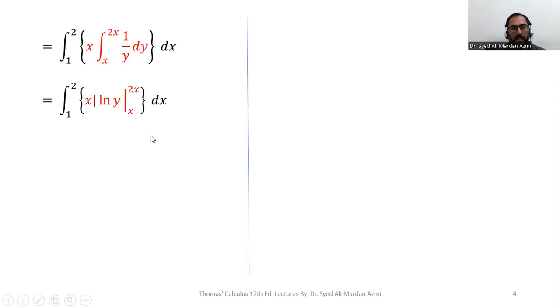In the next step, we will apply fundamental theorem of calculus for the limits, upper limit minus lower limit. So for this, we have replaced y with 2x and minus y with x. We have natural log of 2x minus natural log of x. For this, I have applied the property of natural log. Natural log of a minus natural log of b is equal to natural log of a over b. So from this property, I get natural log of 2x over x. x and x will cancel out. So we have natural log of 2.